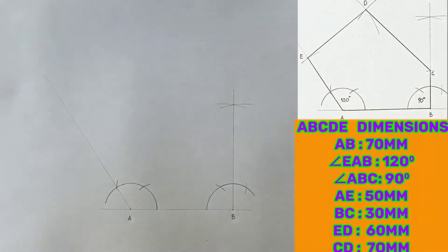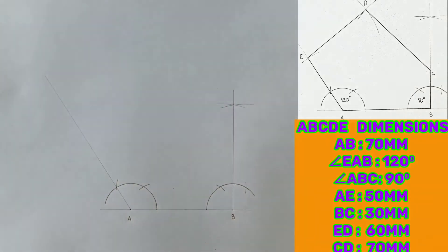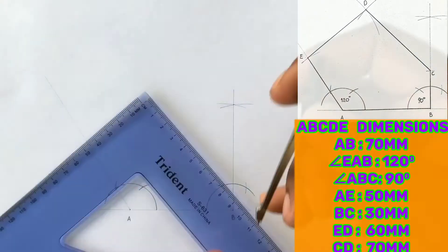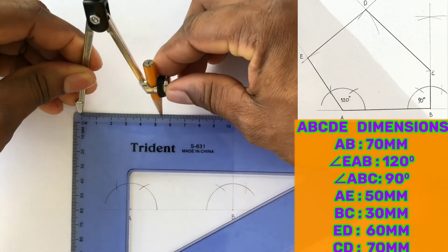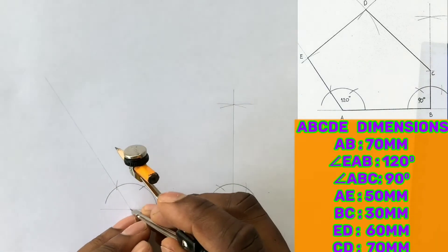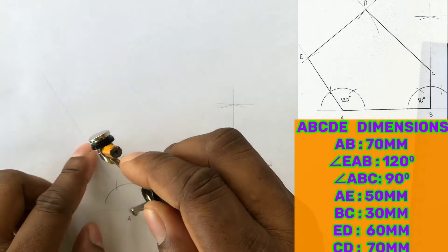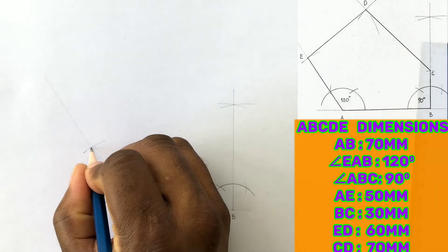Now given that the length of side AE measures 50 millimeters, open your compass to 50 millimeters, and from point A scribe an arc to intersect the line giving you point E. Now identify and label your intersection E.